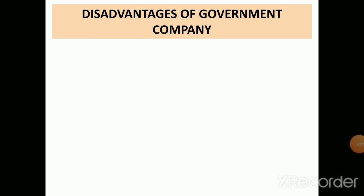Now for the disadvantages. The first disadvantage is that autonomy exists on paper only. Whatever freedom and flexibility is offered to the government company is true only on a theoretical basis. In actual practice, the government, being the major shareholder, dictates the terms and gets things done in its own way.